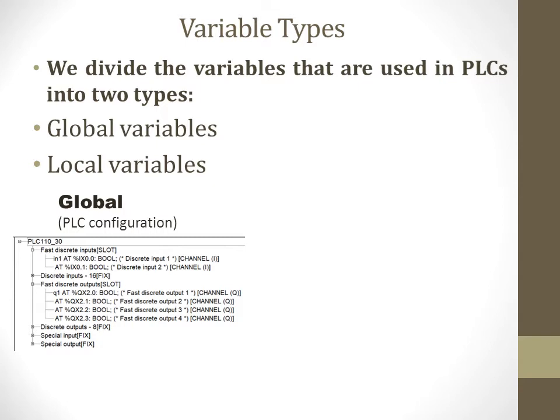As we see from this picture, we have some global variables. For example, in1 is a boolean type variable connected with discrete input of the controller PLC. We also have an output global variable q1, which is also a boolean type variable. These are global variables which are connected with real channels or modules of the real PLC.